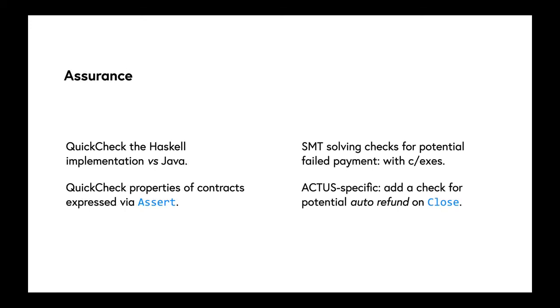We can provide various kinds of assurance. We've used QuickCheck, the Haskell random-based checking tool to check our Haskell executable specification against a Java implementation. That's allowed us to find some discrepancies and some ambiguities in the spec. We're also able to check properties of particular contracts expressed via an assert statement in Marlowe, which allows us to check a property at a particular point in contract execution. We can use SMT solving static analysis to check for potential failed payments.